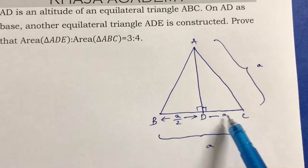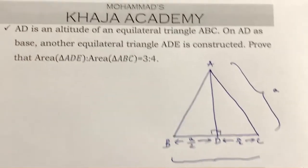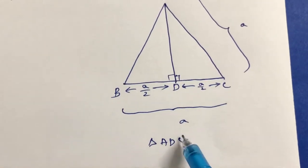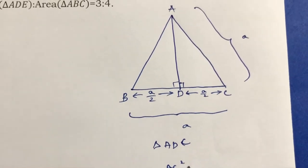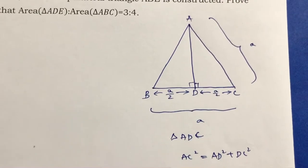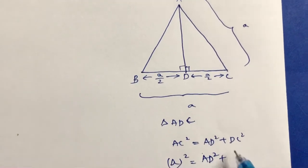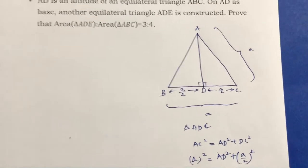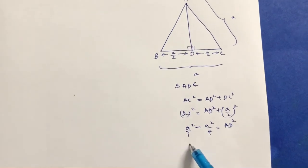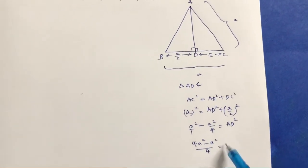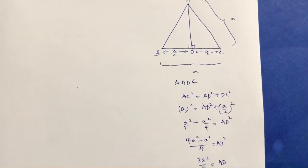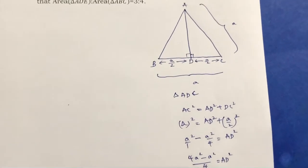Since AD is an altitude, it bisects the base, so DC equals A by 2. Now I will find the value of AD by applying the Pythagorean theorem in triangle ADC: AC² = AD² + DC². So A² = AD² + (A/2)², giving A² − A²/4 = AD², which means 3A²/4 = AD², so AD = (√3 × A) / 2.